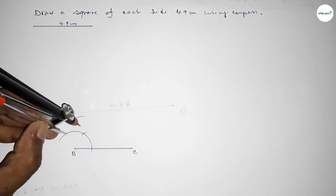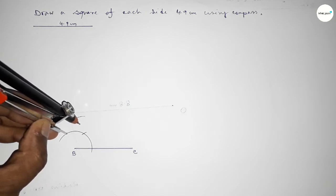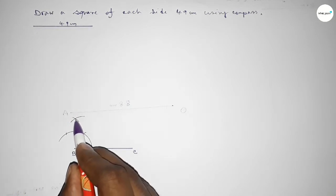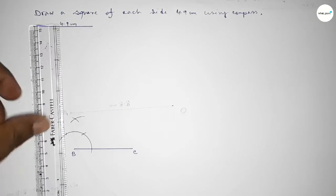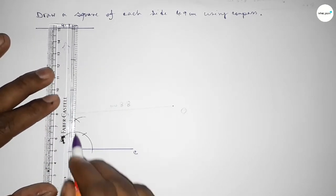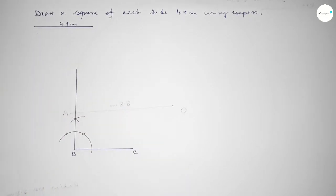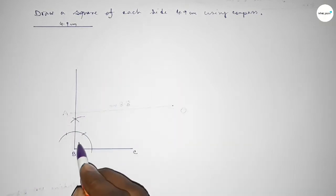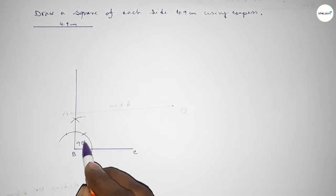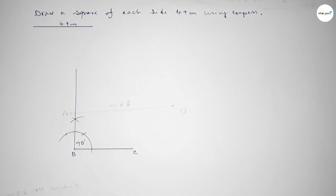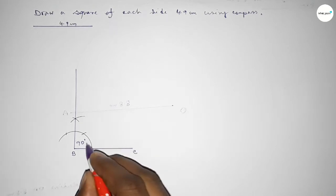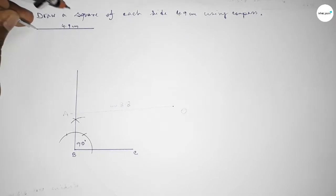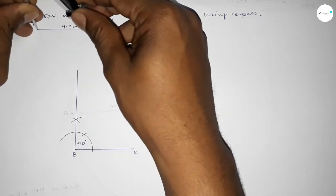Again with the same length, putting the compass here and cutting here so both curves intersect at a point. Now joining this side to get a 90-degree angle. Checking — this is perfectly a 90-degree angle.